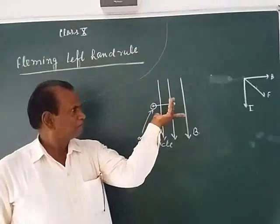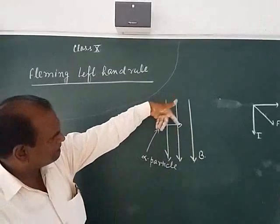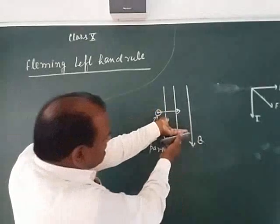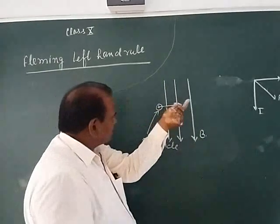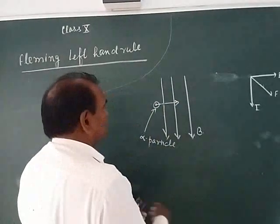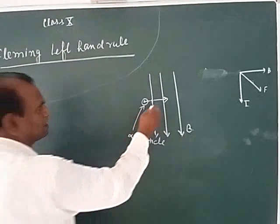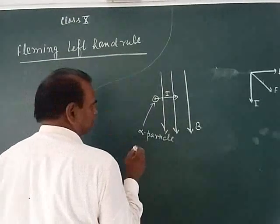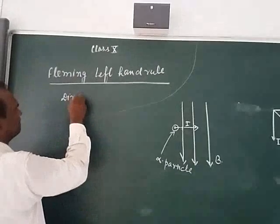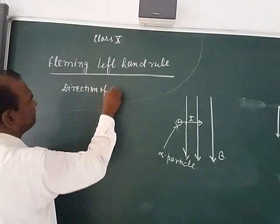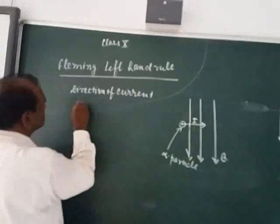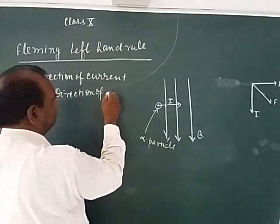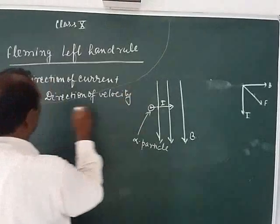This is the direction of magnetic field, and this is the direction of current. The direction of current is the direction of flow of positive charge — that is, the direction of velocity of positive charge.